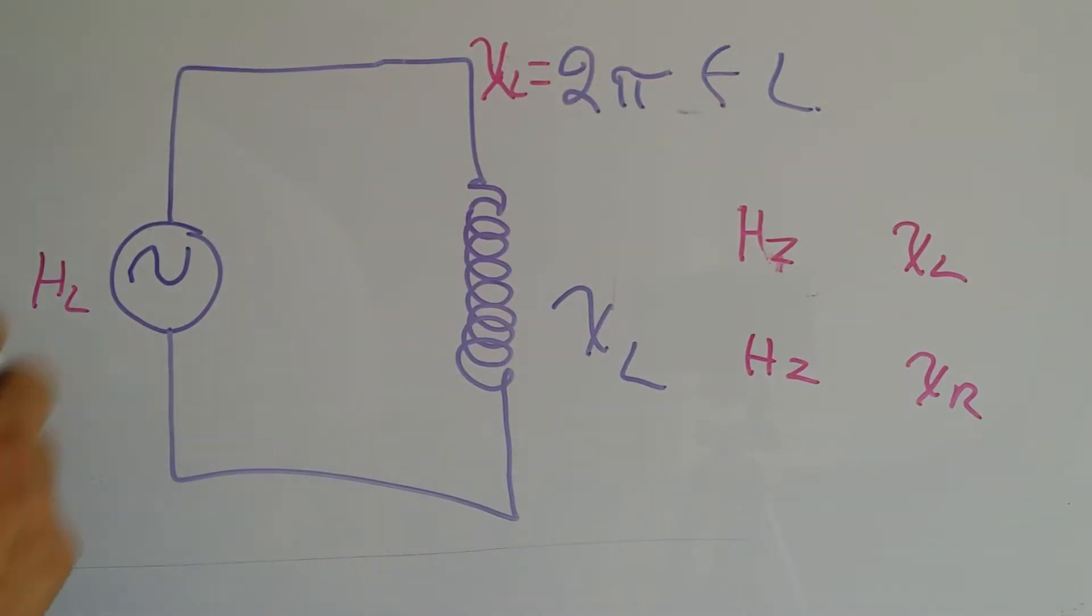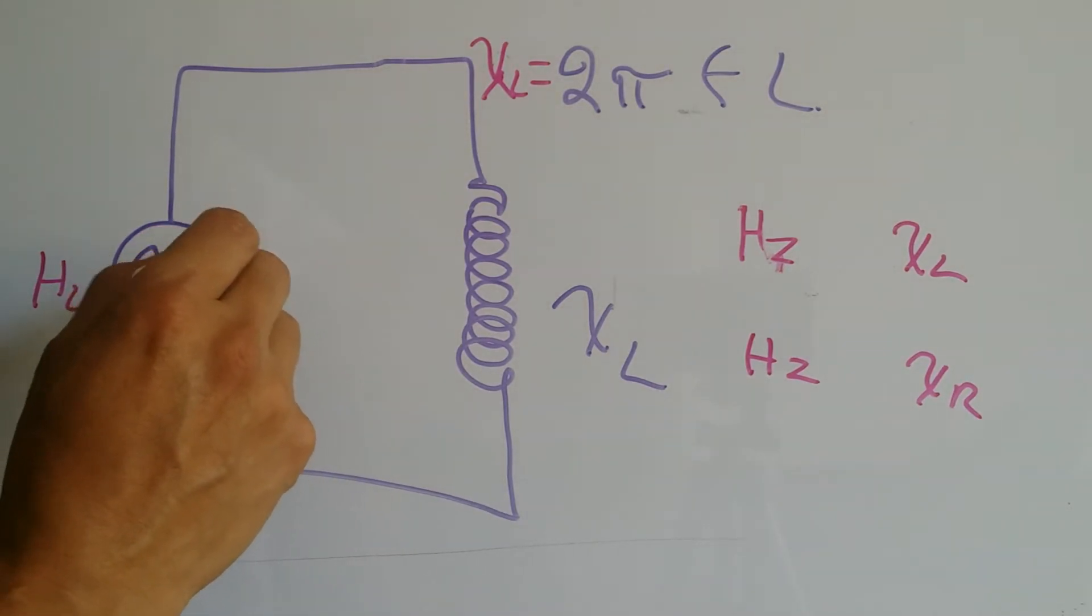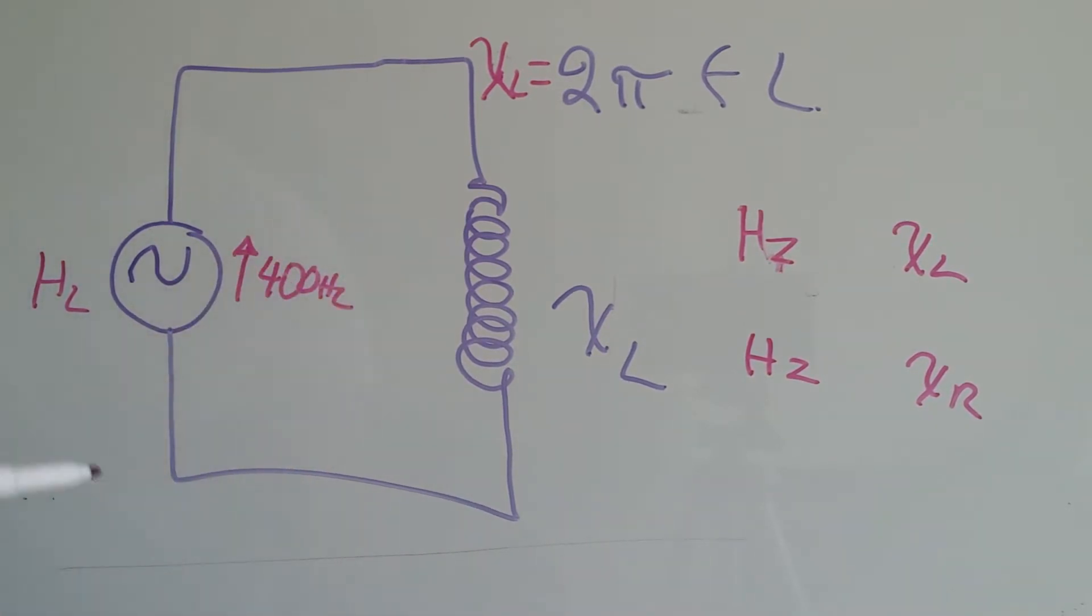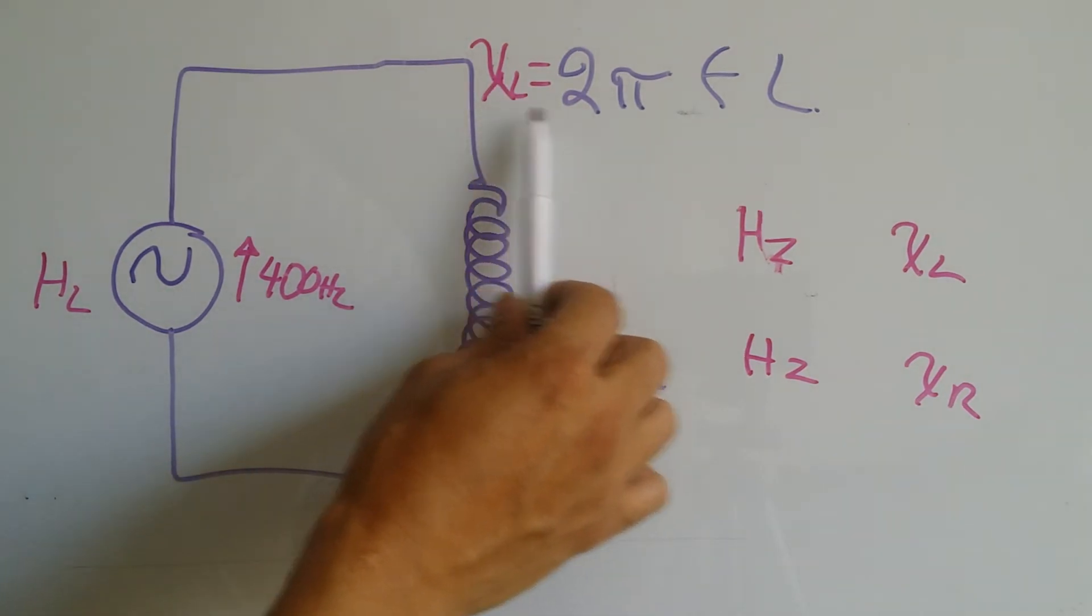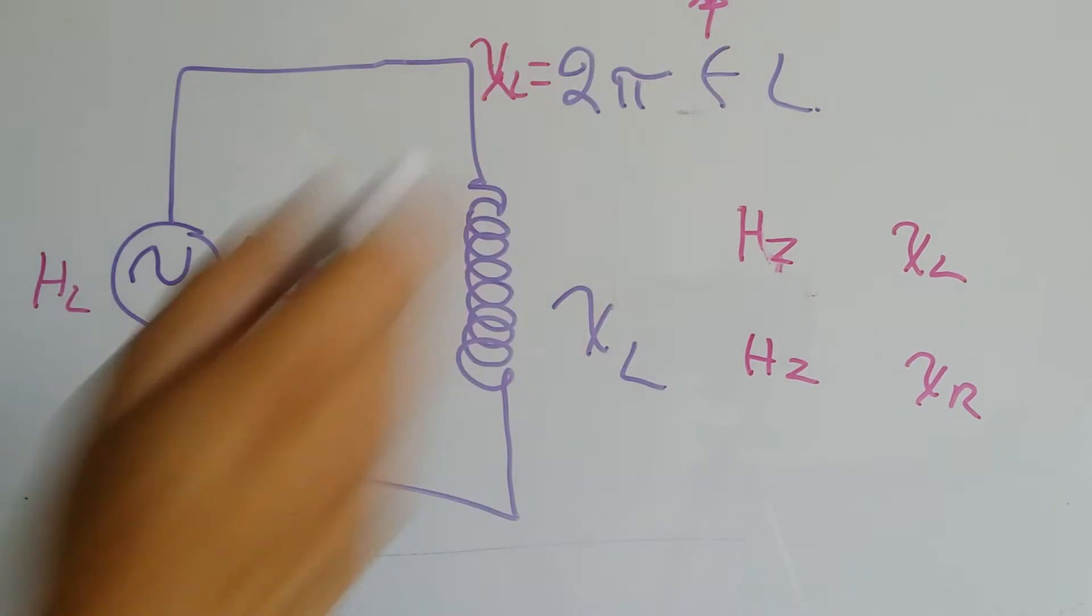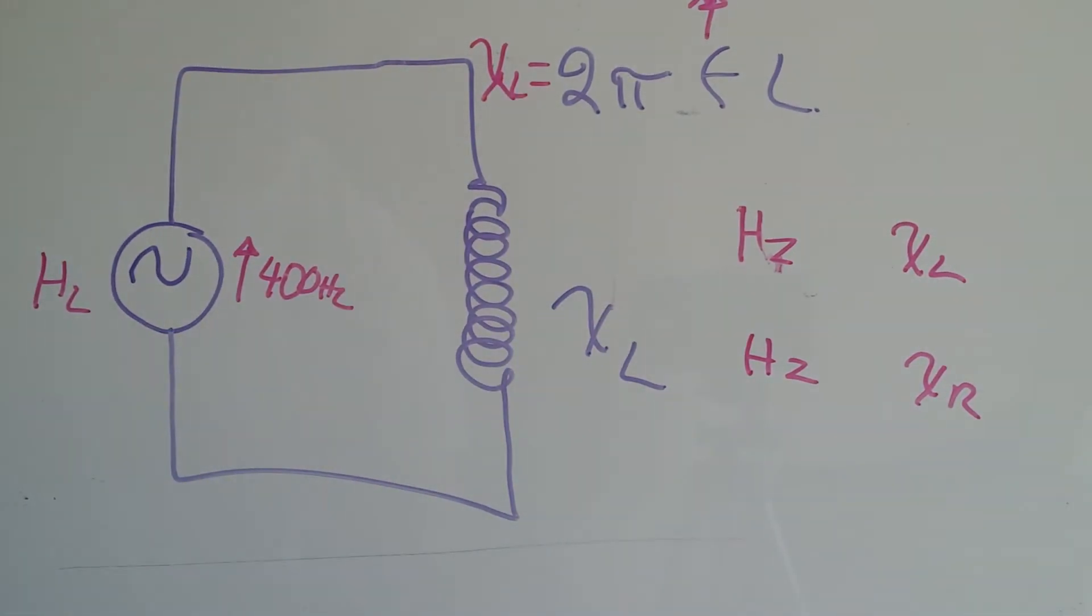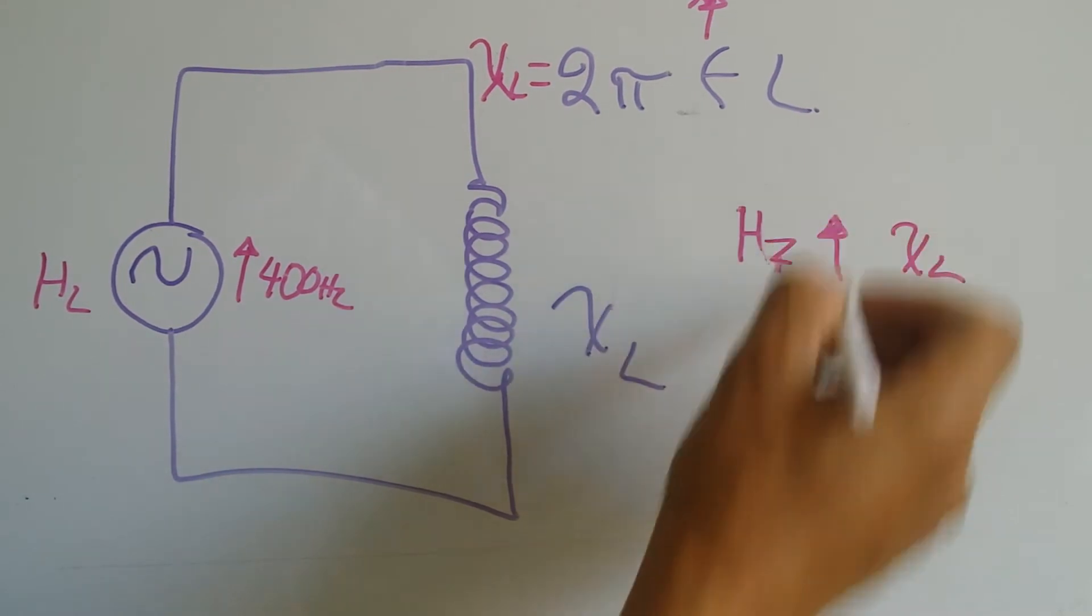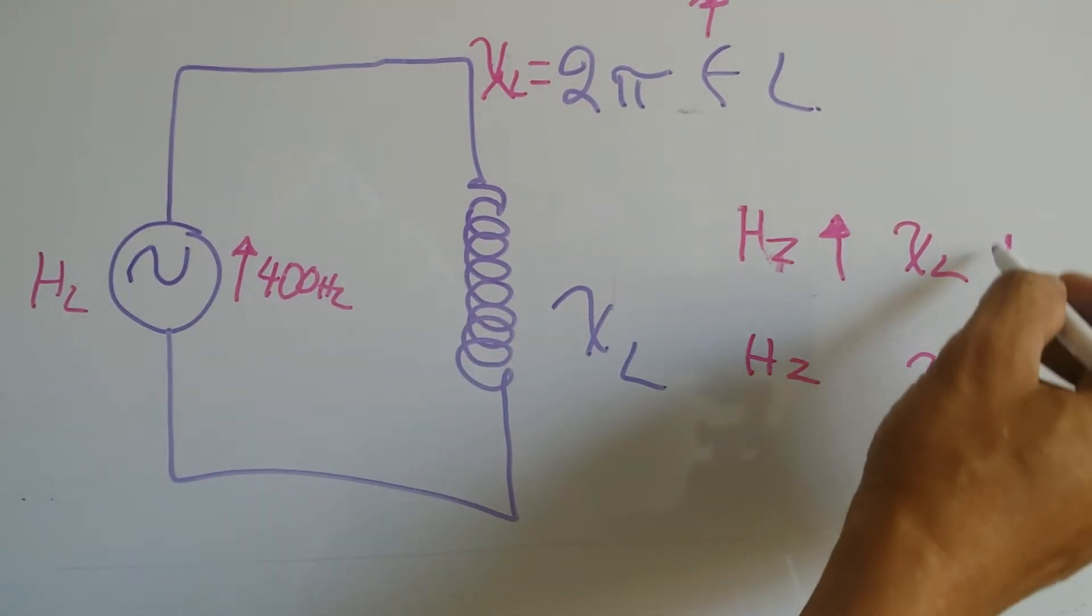Now what happens if the frequency changes? What happens if we increase the frequency to, let's say, 400 Hz? How is that going to affect reactance? Well, if you look into it, if I make this number bigger, that means our reactance is going to go up. So if we increase our frequency, our reactance is going to go up.